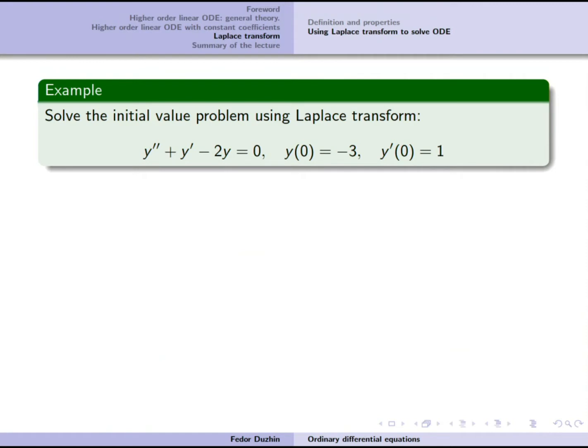Recall that the first method we learned: if we want to solve this, we would have to write down the characteristic equation, then find its roots. The general solution is a linear combination, and then we would use the initial condition to solve for the coefficients.